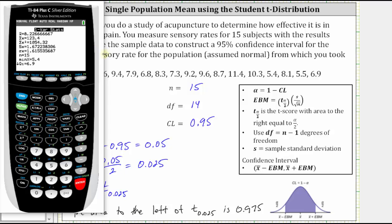X bar is the mean to four decimal places. We have 8.2267, sx is the sample standard deviation, which is 1.6722 to four decimal places. Let's go ahead and record this.